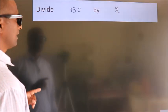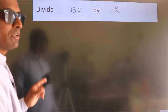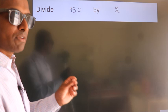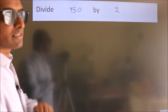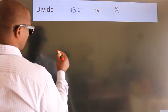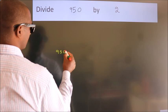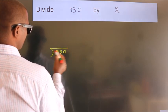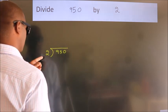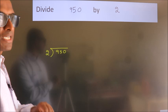Divide 950 by 2. To do this division, we should frame it in this way. 950 here, 2 here. This is your step 1.